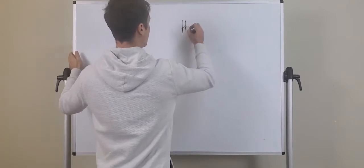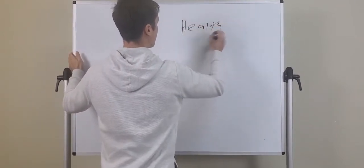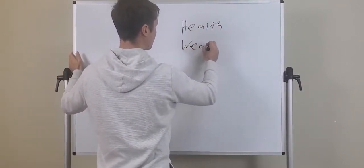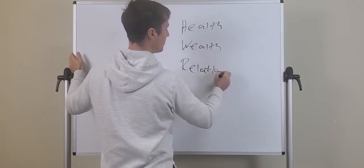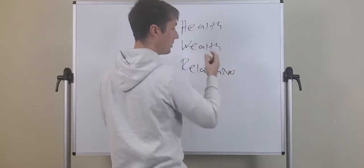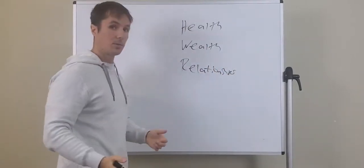There's the health market, there's the wealth market, and there's the relationship market. Any product or any service you buy or anything you sell is going to fall into one of these three markets, three core markets.